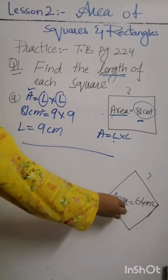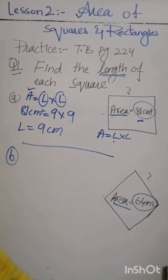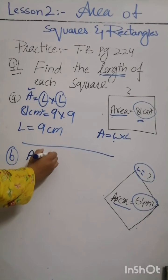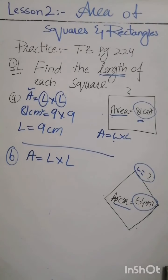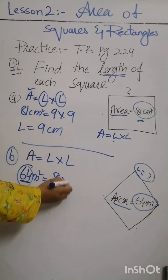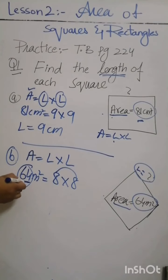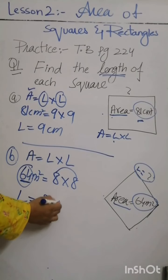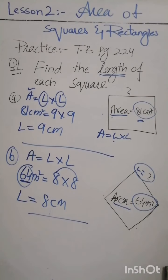We have to find out the length of the square with area 64 meter square. We know the formula: A is equal to L multiplied by L. We think of a number that, when multiplied by itself, gives 64 — that is 8, because 8 multiplied by 8 gives 64. So the length of the square is 8 meters.